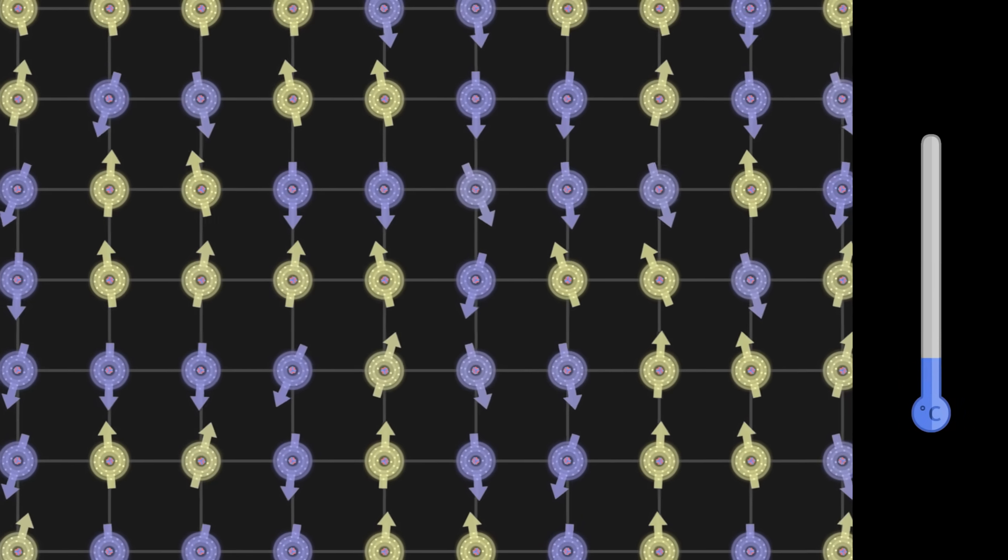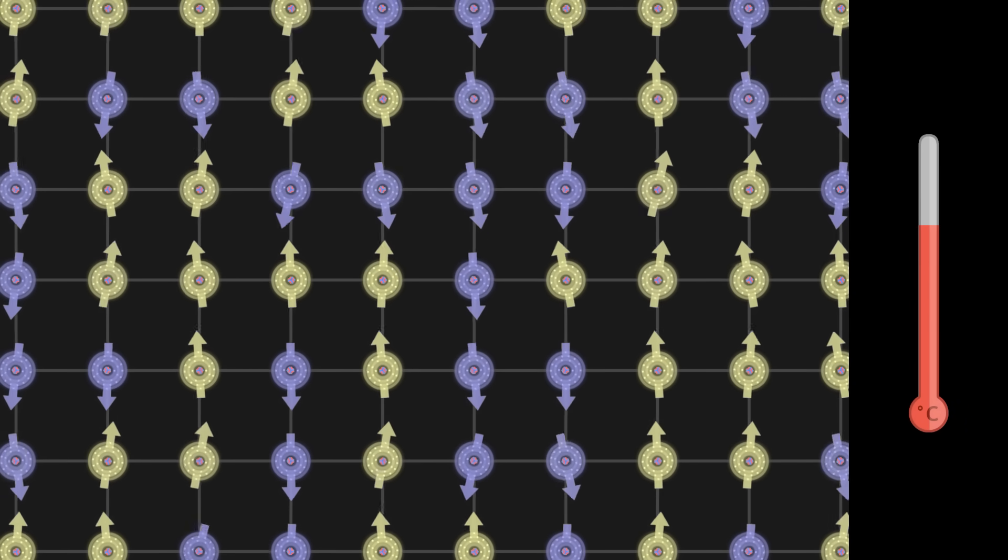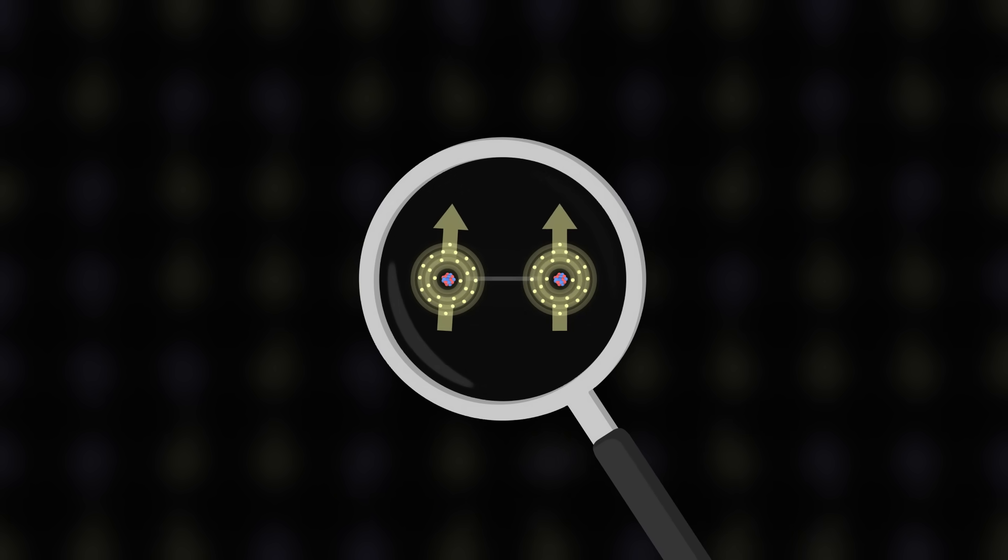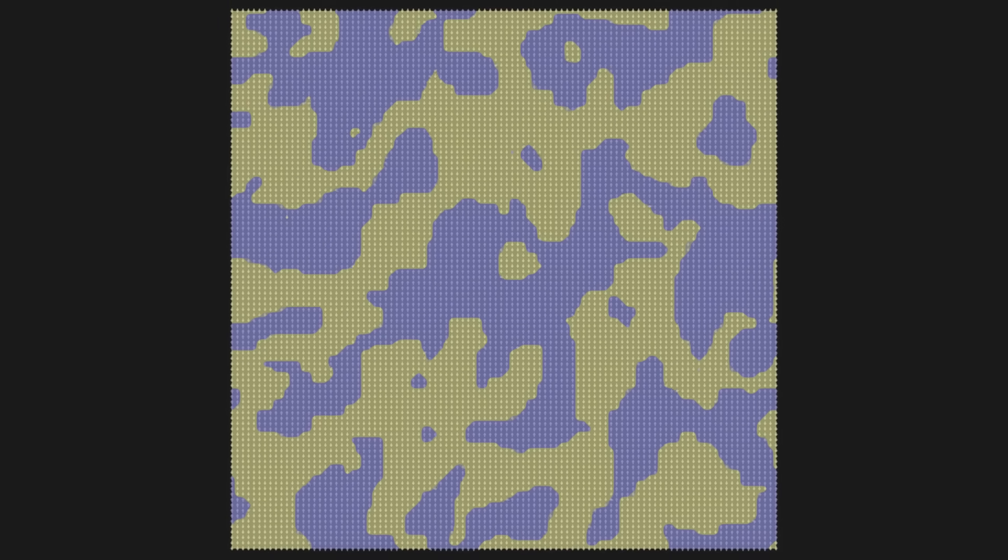First of all, the ambient temperature causes the spins to fluctuate randomly. Second, adjacent spins in the grid tend to align, because this configuration requires less energy and is therefore more stable. As time passes, we see magnetic domains in which nearby spins are aligned with each other.